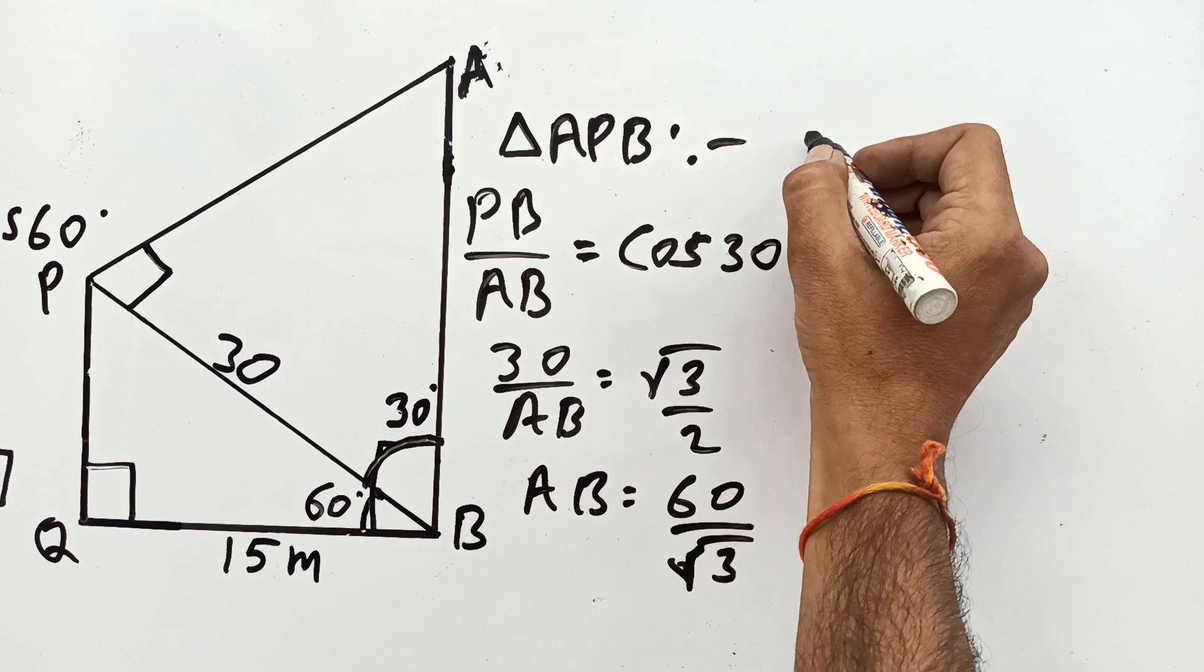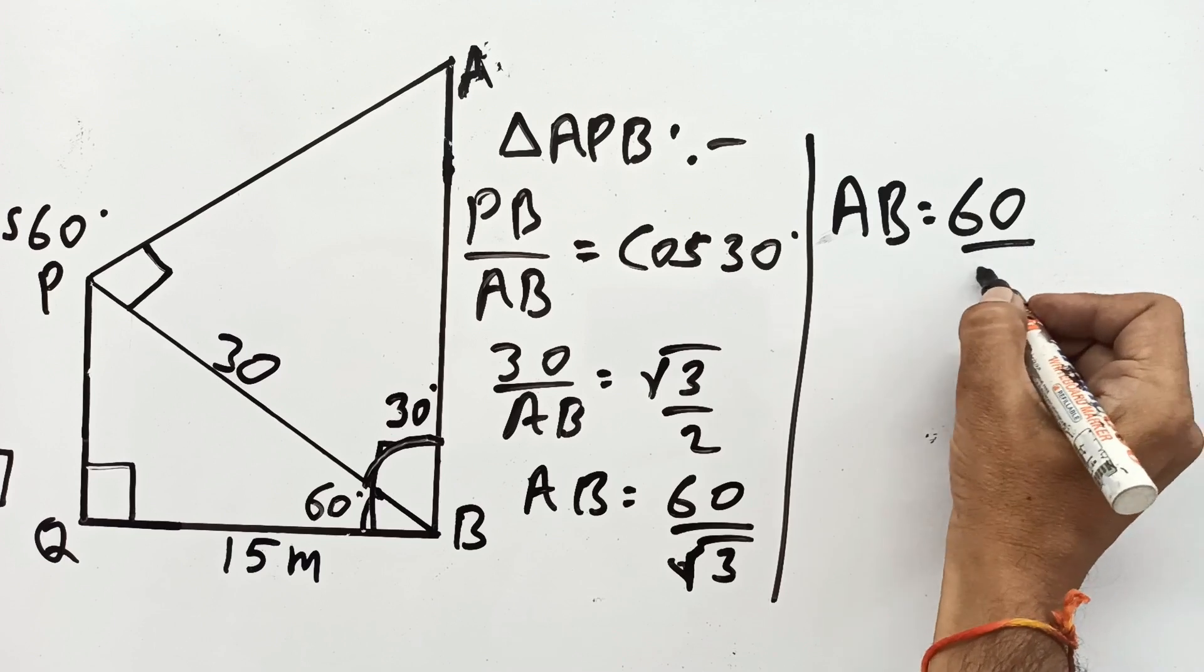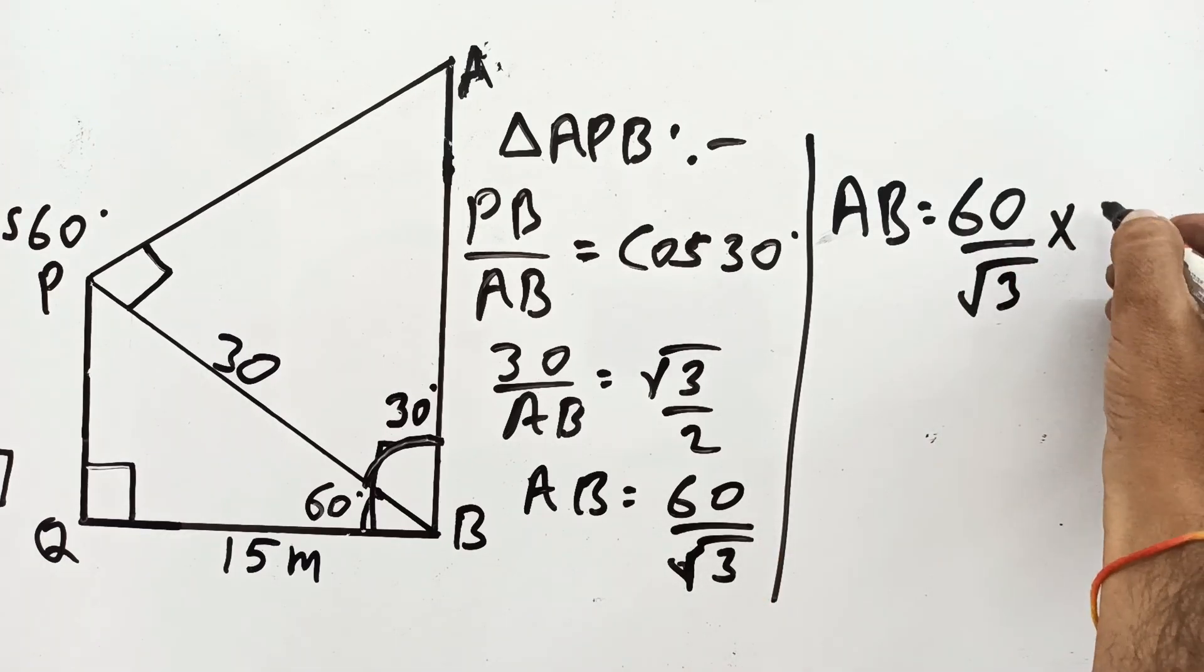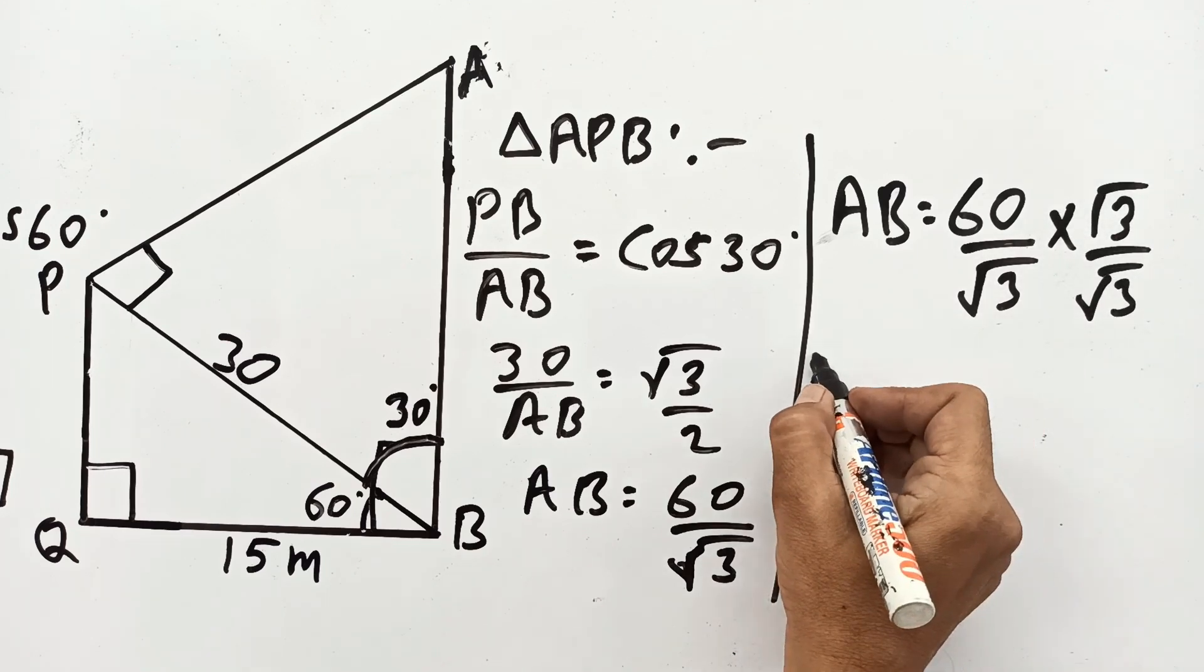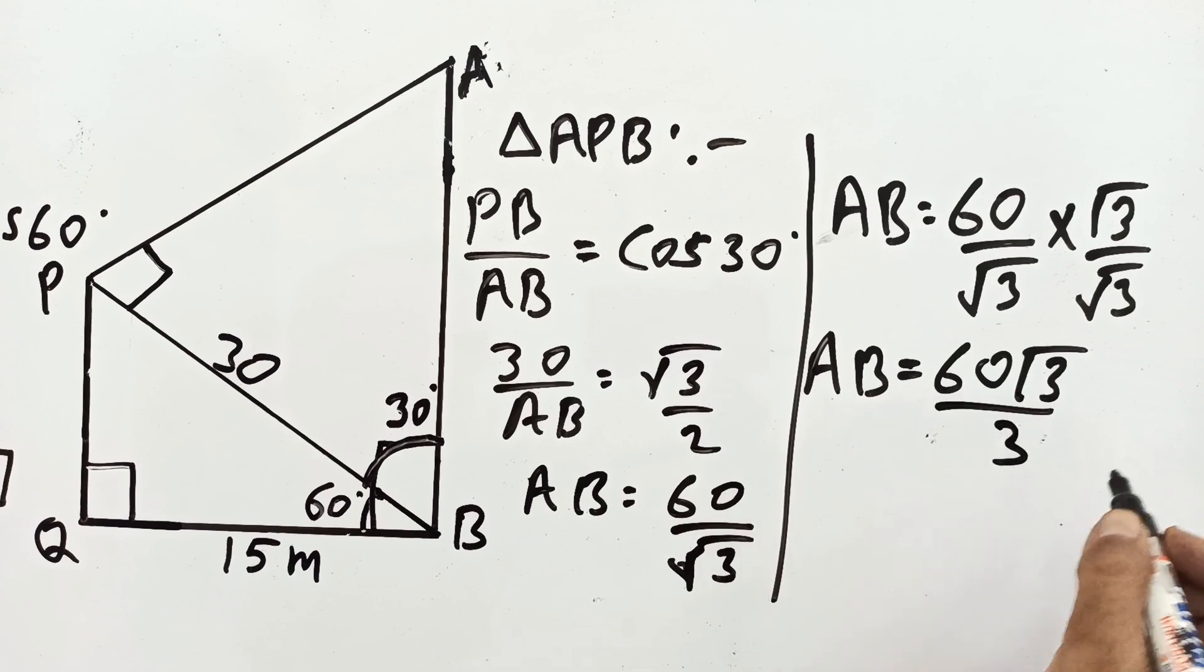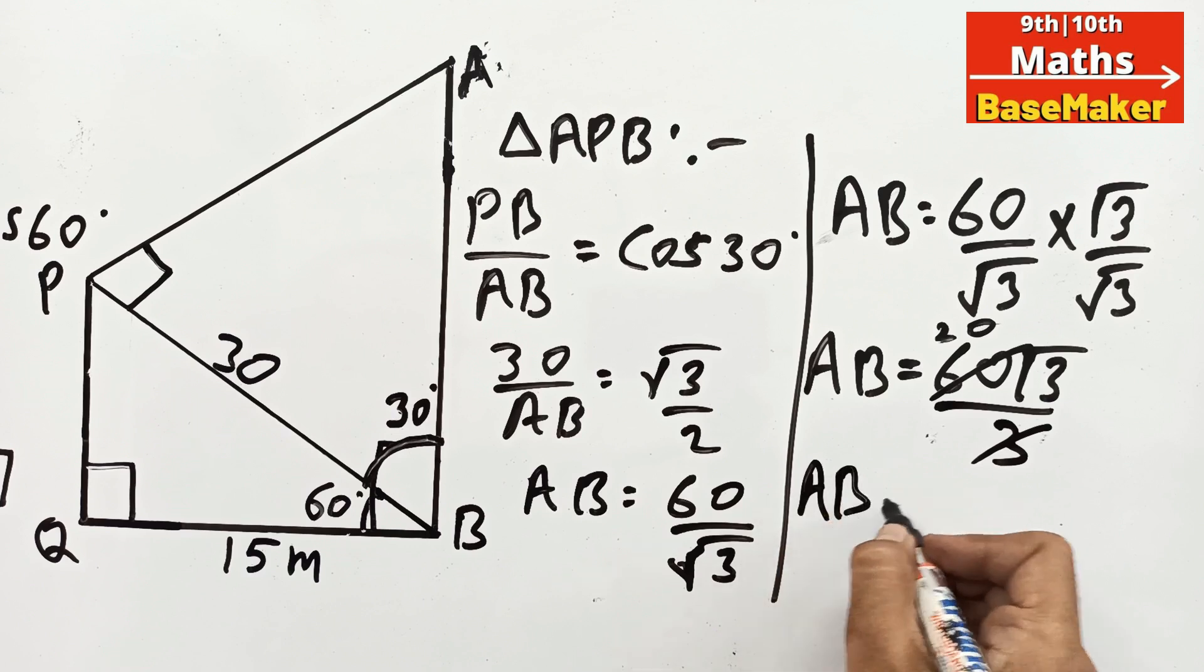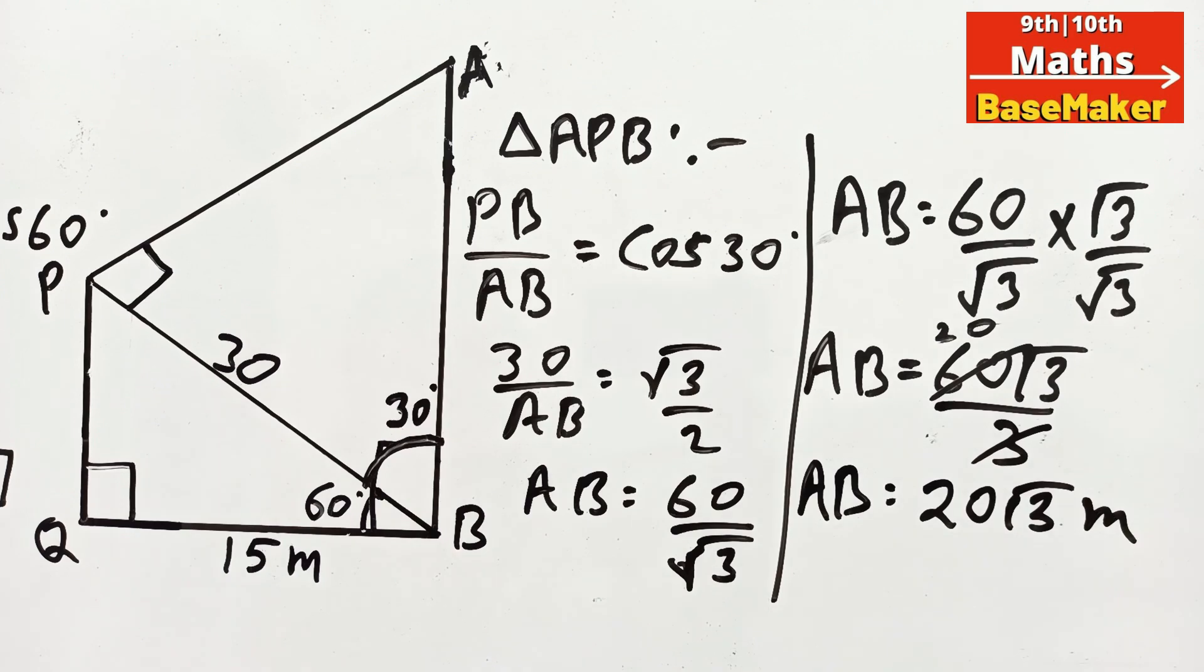In this situation, let us rationalize the denominator. Multiplying numerator and denominator by root 3. Root 3, root 3, 3. So it will be cancelled. In this situation, AB is equal to 20 root 3. So height of the tower AB is 20 root 3 meters.